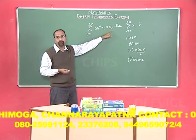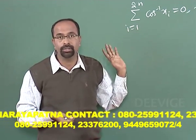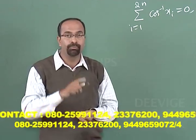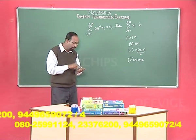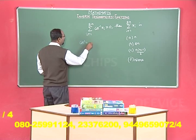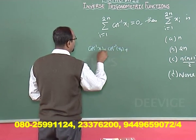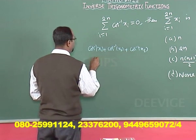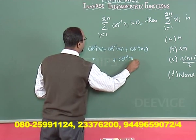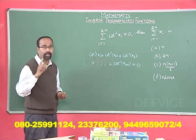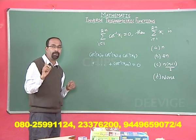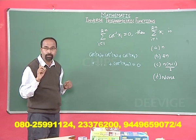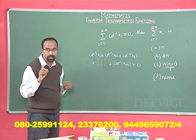Here, cos⁻¹(x₁) + cos⁻¹(x₂) + cos⁻¹(x₃) + … + cos⁻¹(x₂ₙ) = 0. This means each and every term should be 0, because all of them are positive. The sum of n distinct positive numbers equals 0 only if each and every one of those numbers equals 0.